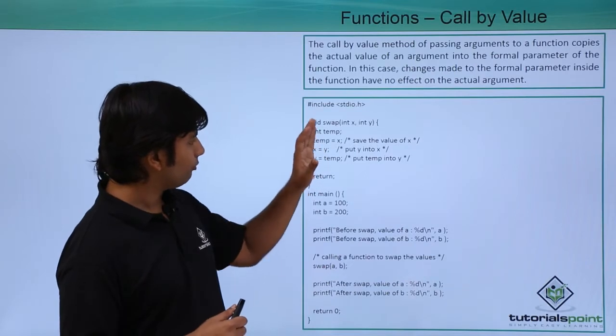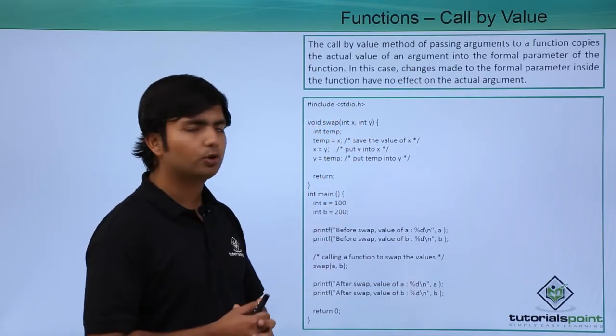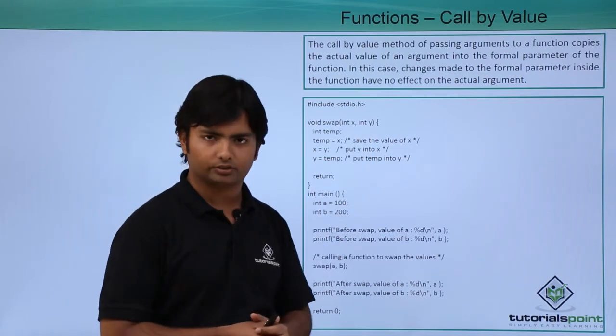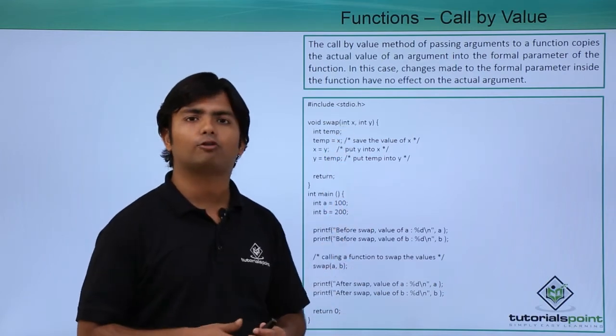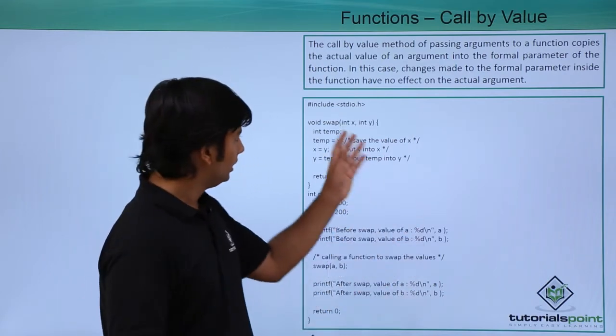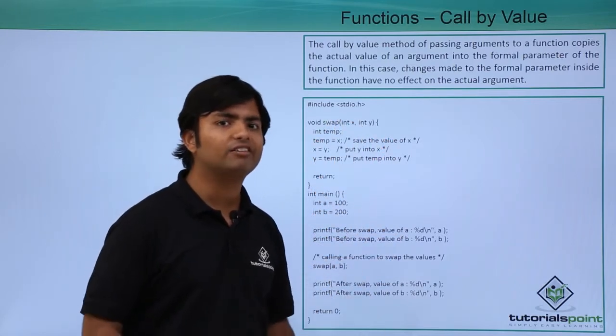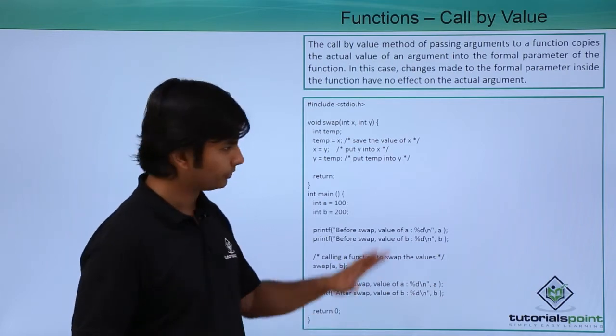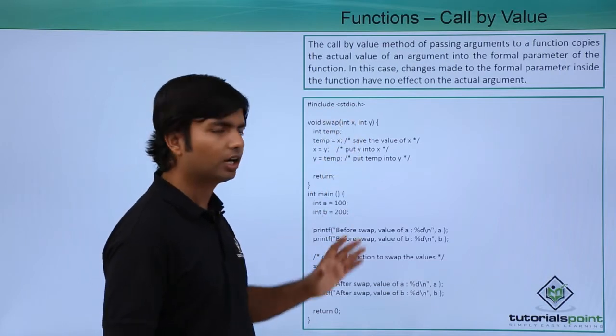Basically whenever you define a function like here you can see int x and int y, we generally call these the formal arguments. When you define a function, the arguments which you pass are the formal arguments. Why we call it formal? Because currently int x and int y is not having any value. It's just for the structure, I mean signature purpose. So they are not carrying any value, they are just formal arguments.